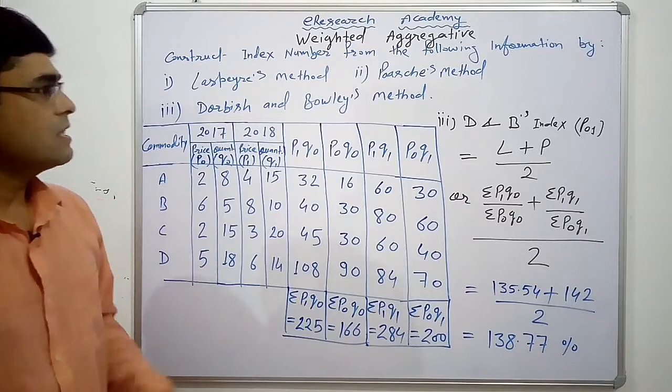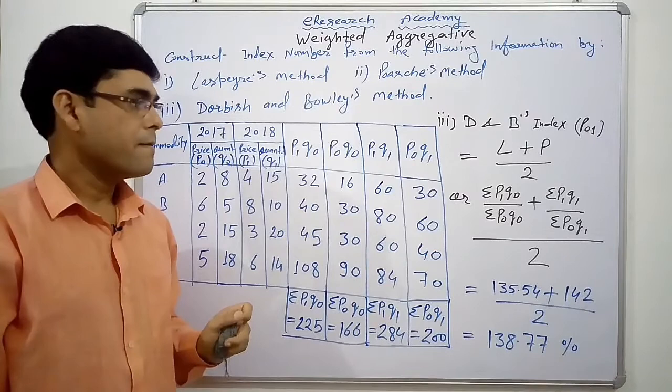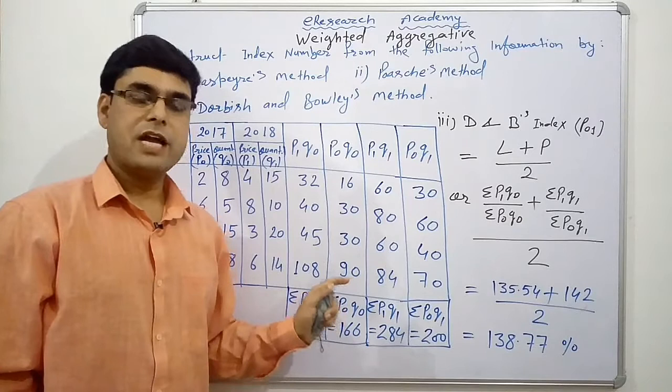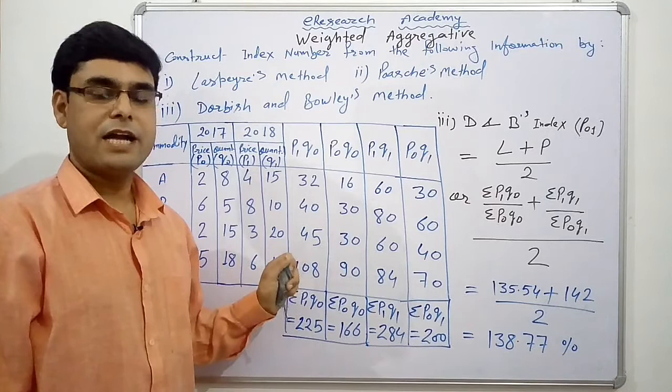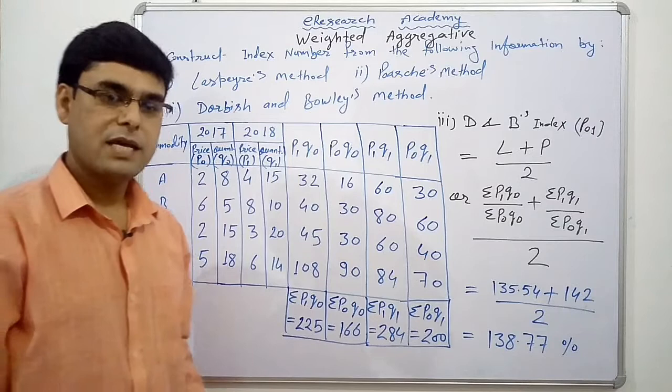So, these were the 3 methods under the weighted aggregative method of index number. And, next we have Fischer's ideal index number that we will discuss in next video. Thank you very much for watching this video. If you have not subscribed this channel so far, I request you please subscribe this channel and share it to your friends and give your valuable comments. Also, just press the notification bell so that you will get the notification for the future videos. So, have a nice day ahead. God bless you.